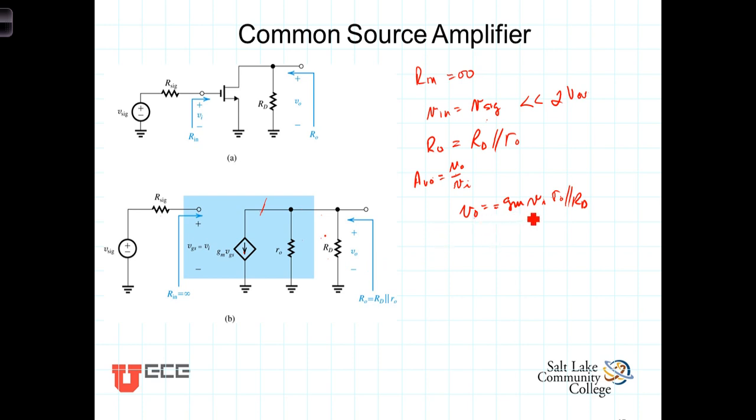So AV0 then is Vout over Vn. AV0 then is equal to negative GM times the parallel combination.